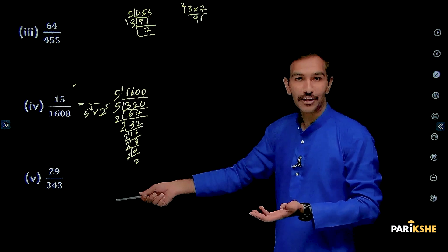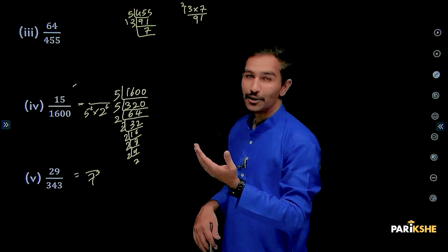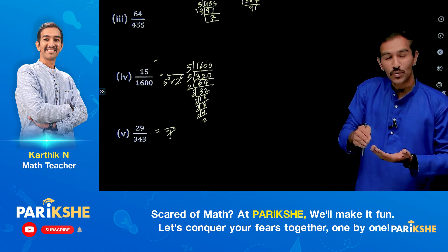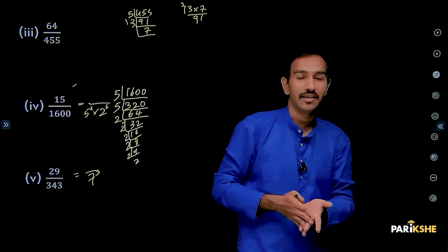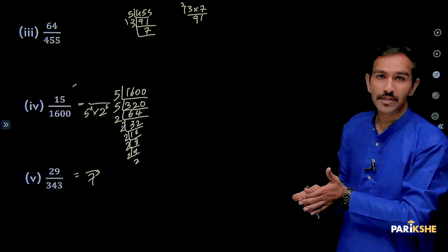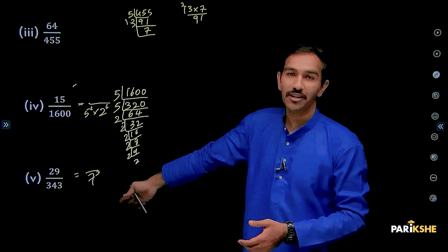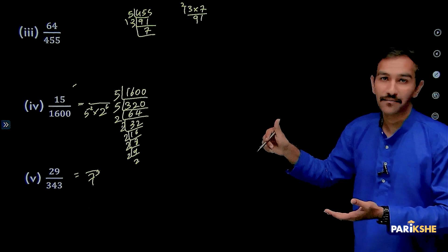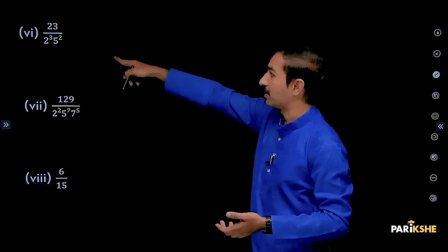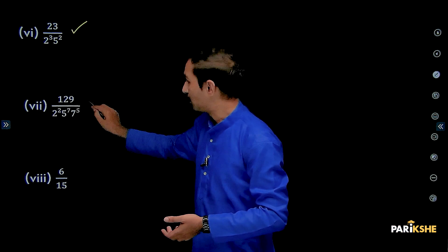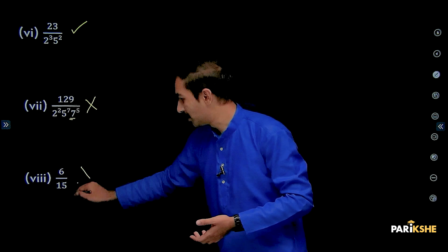Next up, 29/343. 343 and then 7 cube, correct. 343 is nothing but 7 cube. Idhikkye heladhu cubes mathe roots, at least 20 vargo gothe roots, at least 30 vargo gothe roots, 25 square, 26 square, 17 cube, 18 cube, 20 cubes and first 30 squares gothiddharai, easy aagatte. This is 7 cube irodhri, this is again non-terminating because this is not in the form of 5 to the power of m into 2 to the power of m.